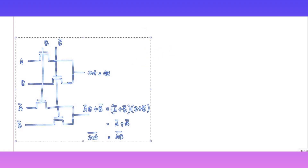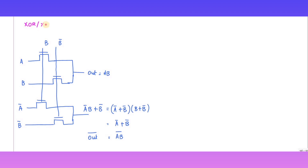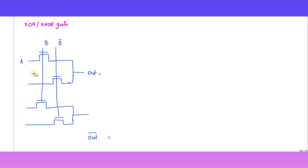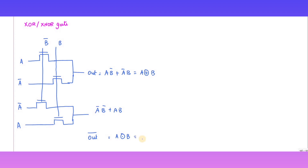Similarly, I am going to implement XOR and XNOR gate. For the XOR gate, substituting A and A-bar: this is A·B-bar + A-bar·B, which is equal to A XOR B. Similarly, the complement is A-bar·B-bar + A·B, which is nothing but A XNOR B — that is A XOR B the whole bar.